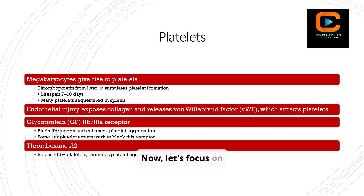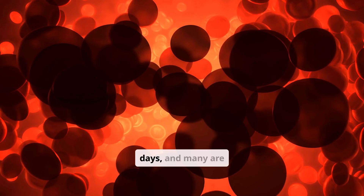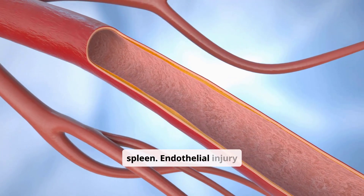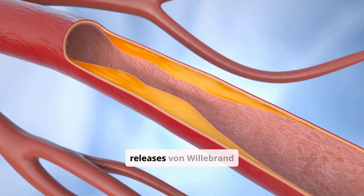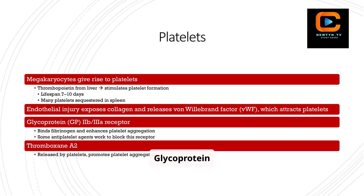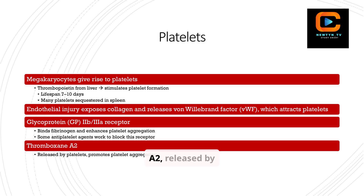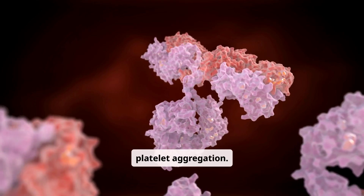Now let's focus on platelets. Platelets are derived from megakaryocytes, and their formation is stimulated by thrombopoietin from the liver. They have a lifespan of 7–10 days, and many are sequestered in the spleen. Endothelial injury exposes collagen and releases von Willebrand factor, which attracts platelets. Glycoprotein 2b3a receptors bind fibrinogen and enhance platelet aggregation, and some antiplatelet agents work by blocking this receptor. Finally, thromboxane A2, released by platelets, promotes platelet aggregation.